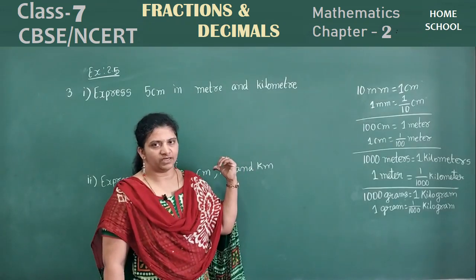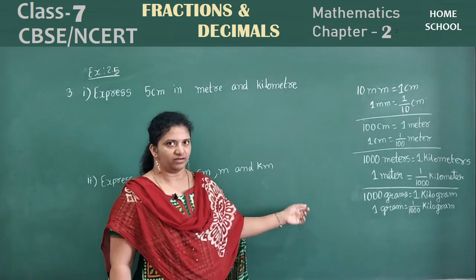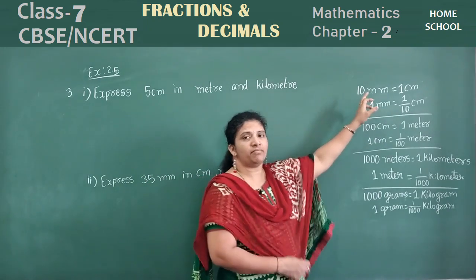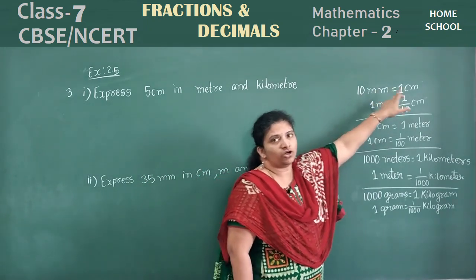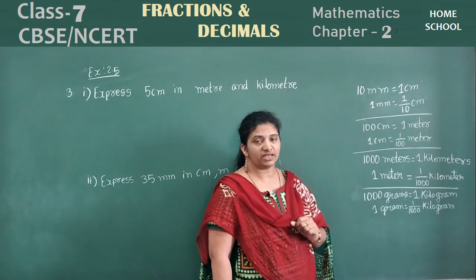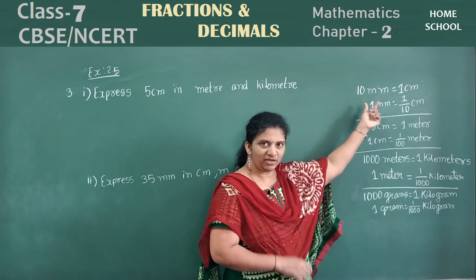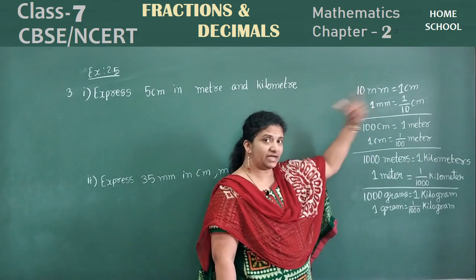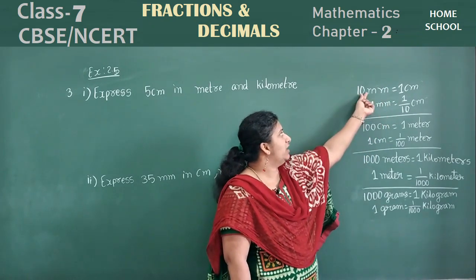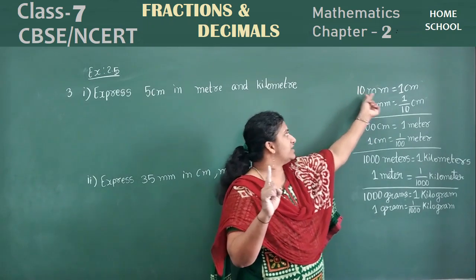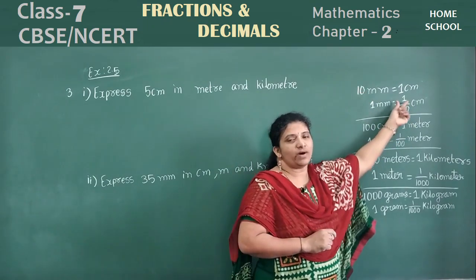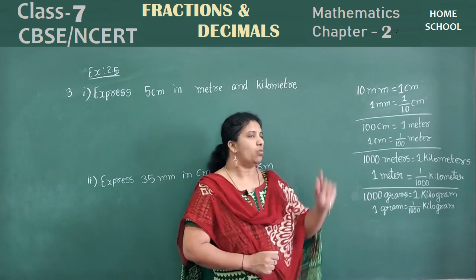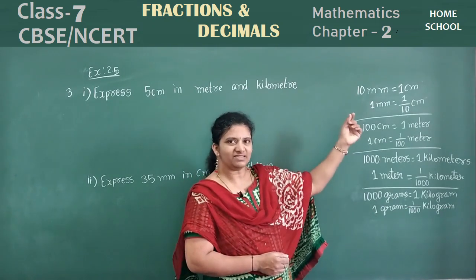Before starting the third main, let's review the conversions I've written here. 10 millimeters equals 1 centimeter — as you can see on your scale. Then, if 1 millimeter, how will you convert into centimeter? 10 has 1 zero, so send that to the denominator: 1 millimeter is equal to 1 by 10 centimeter. Next: 100 centimeters equals 1 meter. 1 centimeter is equal to 1 by 100 meter.